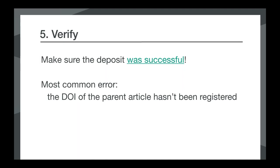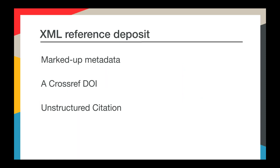You can also deposit references as part of the XML you send us to register your content — this is the most common method. References can be deposited as marked-up metadata. Our metadata deposit schema has specifications for citations; we collect basic bibliographic data such as journal title, book title, author names, page numbers, volume, issue numbers, and dates. You can also submit a citation as just a DOI if you know it, or send in unstructured citations if you're not able to mark up your references, though that can be a little tricky.